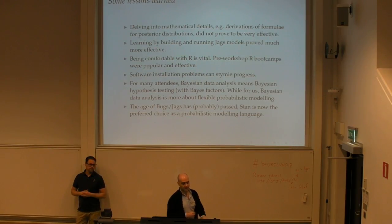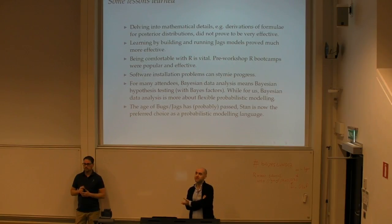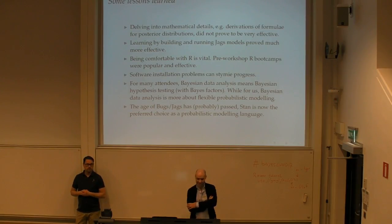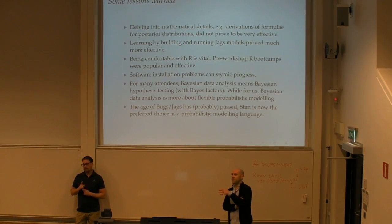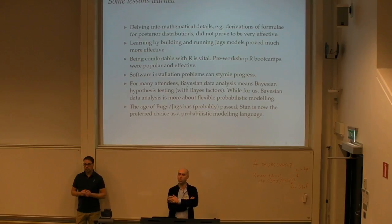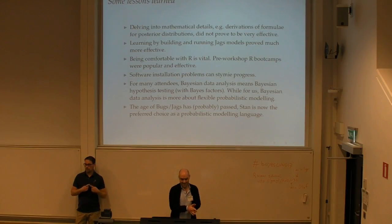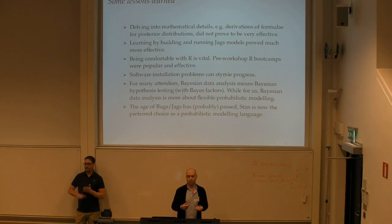In terms of lessons learned — some genuine surprises, some pleasant and some less so. First, delving into mathematical details didn't go down so well. I feel strongly about this because one of my frustrations with traditional statistics as it's taught is that it's very opaque — we're given recipes for what to do in certain situations but told not to worry about the details, like 'here's an F statistic, just use it when these criteria are met.'